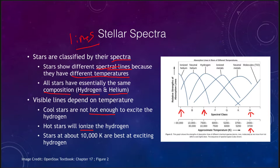In fact, 99% of the atoms in any star will pretty much be hydrogen or helium. It is those stars that are right around 10,000 degrees that are the best at exciting hydrogen, and therefore give us the strongest hydrogen lines.